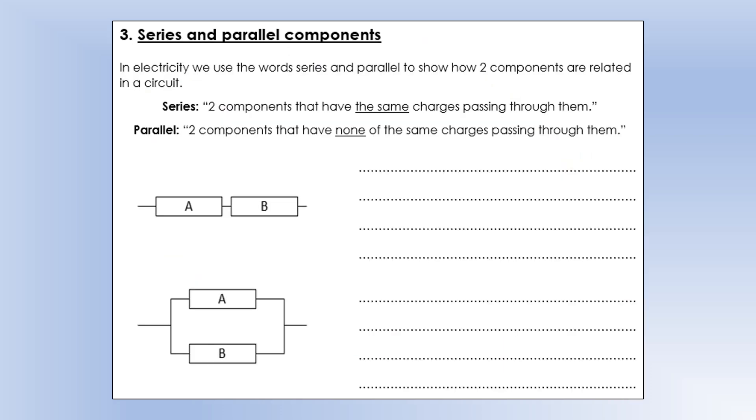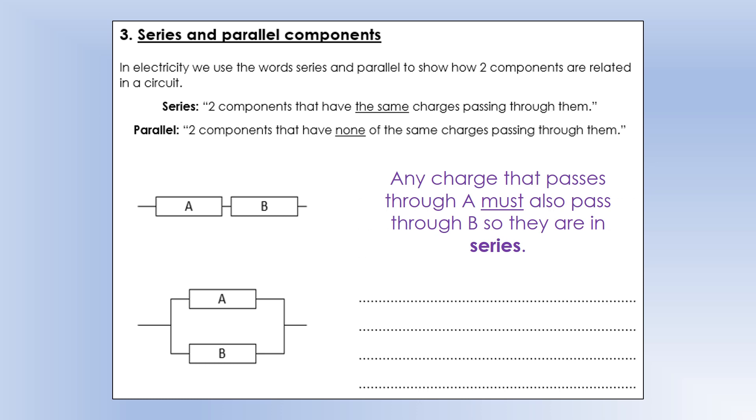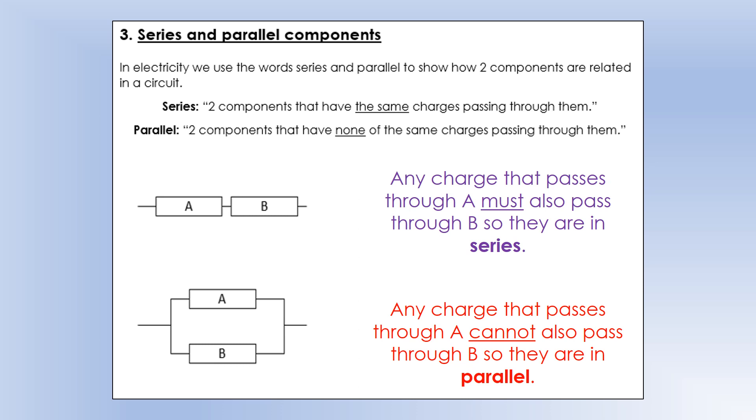So final section, looking at series and parallel components. Now you've probably come across this idea before, but I want to be precise about what we mean by series and parallel, and then I'll show you an example which people commonly get wrong. So, series are two components that have the same charges passing through them. And more specifically, if the charge goes through one, it must go through the other one. So if we look at the two that I've labelled A and B here, so any charge that goes through A must go through B. So we describe those two as being in series. Whereas the description of parallel, we've got two components that don't have any of the same charges passing through them. So you can see with this circuit here, a charge that goes through A doesn't go through B, because it would just continue on once it's gone through A. Or one that goes through B doesn't go through A. So that's why we describe them as being in parallel.